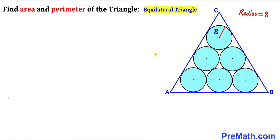Welcome to pre-math. In this video we have got six identical blue circles fully inscribed in an equilateral triangle ABC, such that the radius of each of these circles is 8 units. Furthermore, all of these circles are tangent to each other, and our task is to calculate the area and the perimeter of this blue triangle ABC.